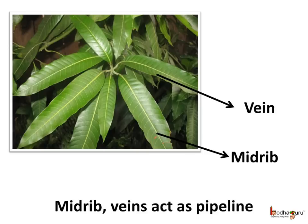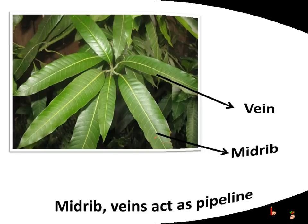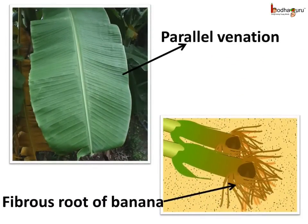The veins act as a pipeline which carries the water, minerals and the food up and down the leaf. One can tell what kind of root a plant has by just looking at the leaf. The veins in the plant with fibrous roots are parallel to each other on both sides of the midrib, like here we see on the banana leaf. The arrangement of veins on a leaf is called the leaf venation. When the veins on either side of the midrib are parallel to each other, we call it parallel venation.